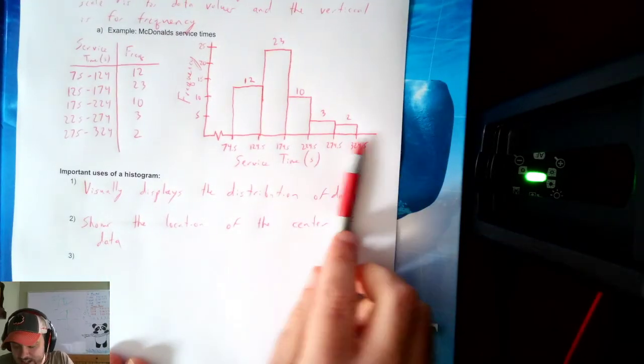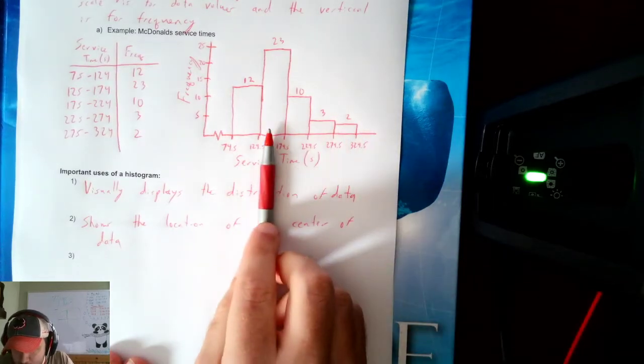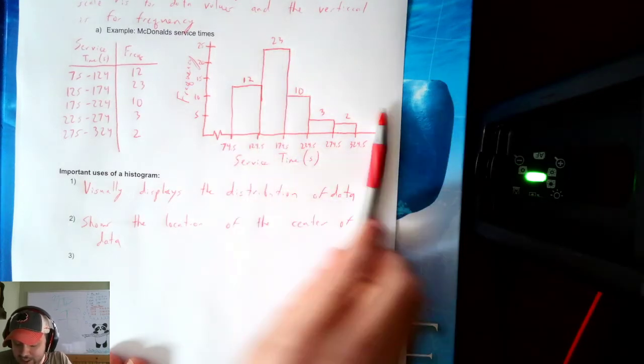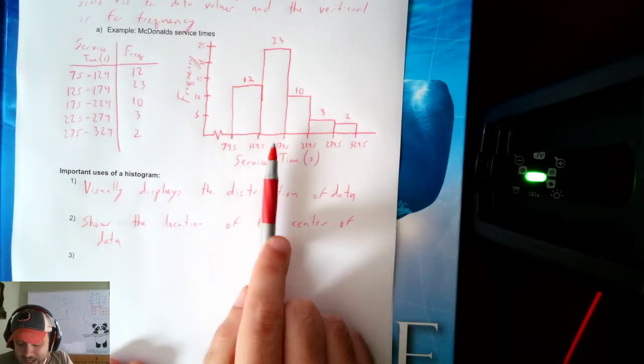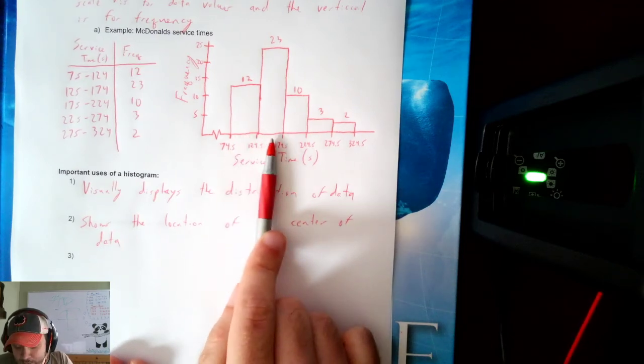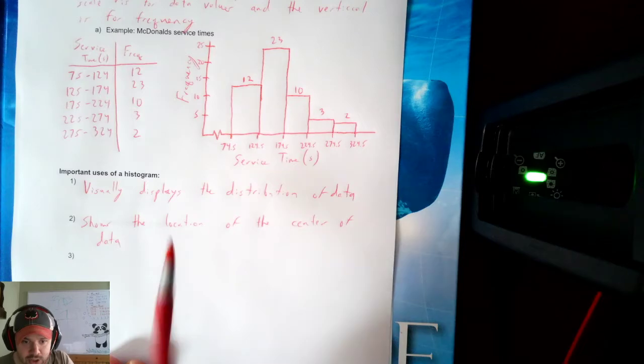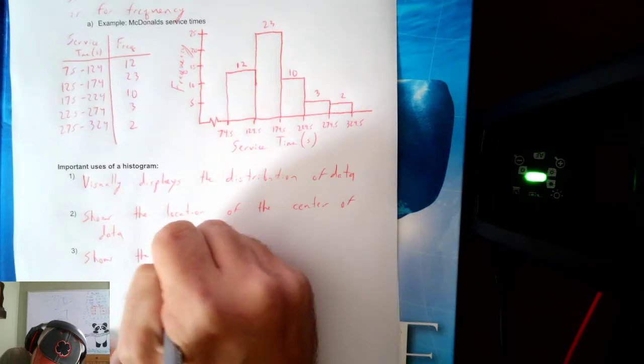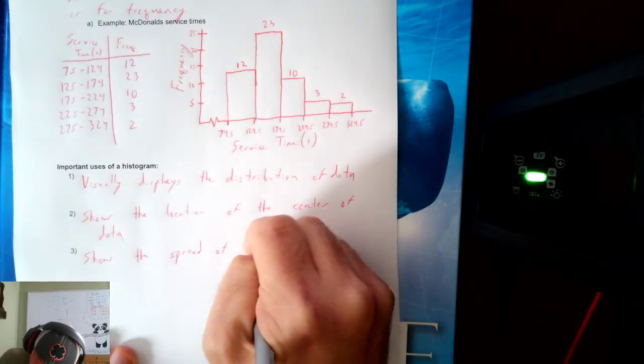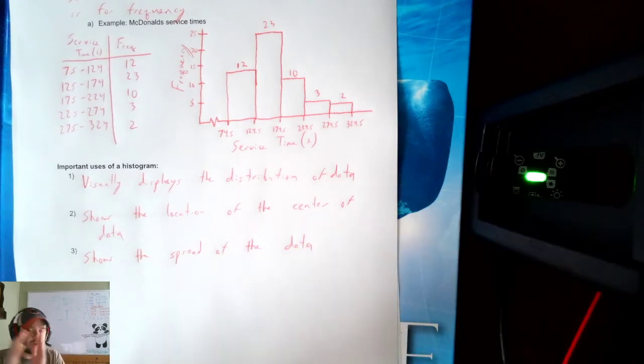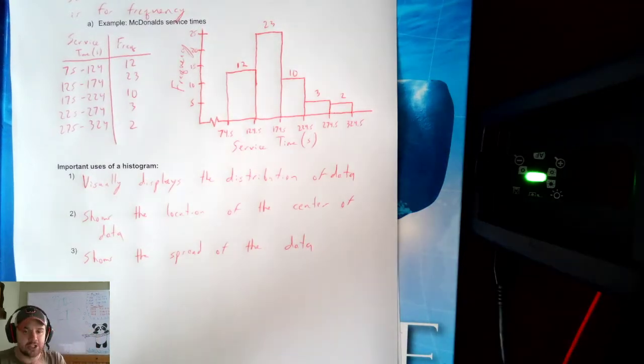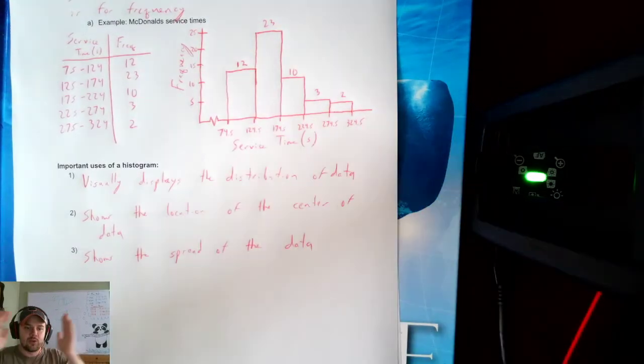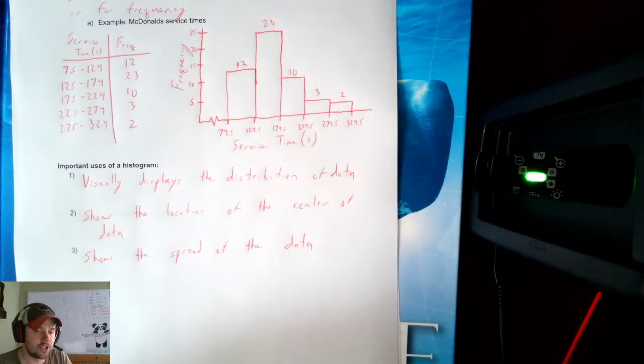It also shows the location of the center of the data. If I try to find the center in this data, I know that it's going to be somewhere in here. This is halfway between each side. If you try and think about balancing this shape on the end of your pen, the point of balance is going to be somewhere in the center of the mass. It shows the spread of the data.